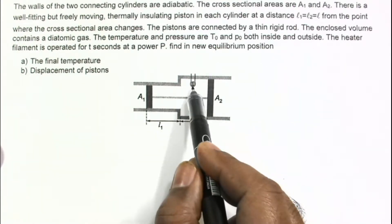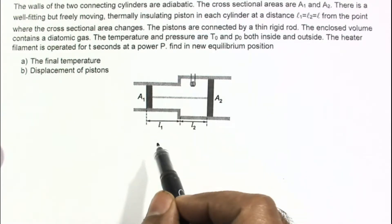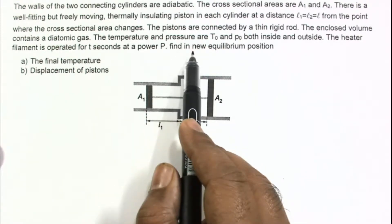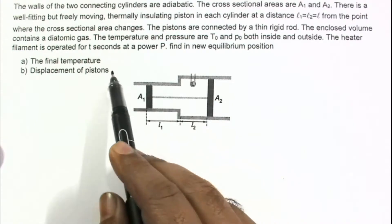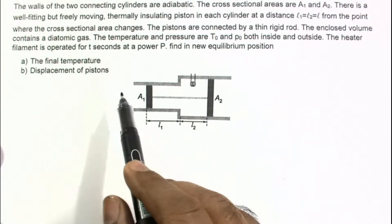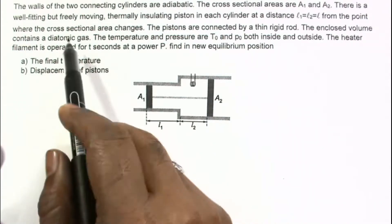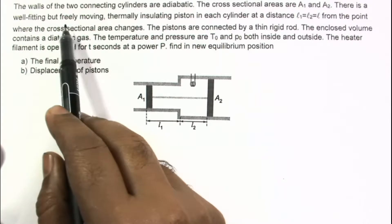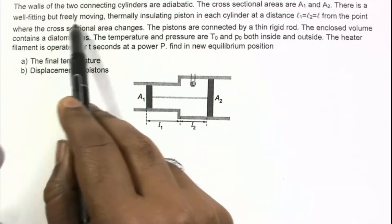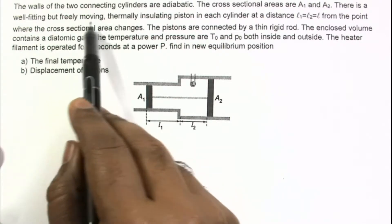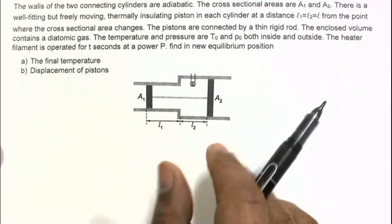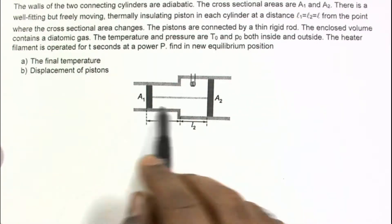The heater filament is operated for T seconds at power P. Find, in the new equilibrium position, the final temperature and displacement of the pistons. We are given that the pistons are freely moving, meaning there is no friction involved — the pistons can move freely in the cylinder.